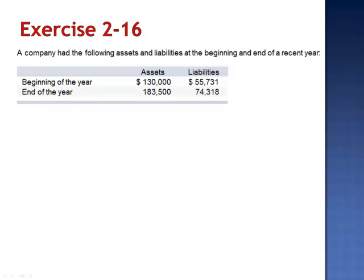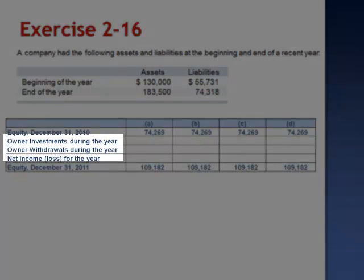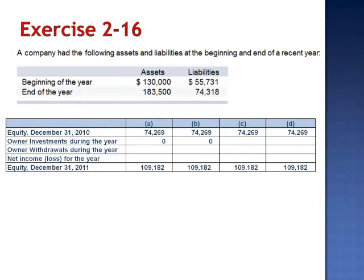When we began this problem, it looked like we had four identical companies — each with the same beginning equity and the same ending equity. But you can't just look at the balance sheet. To find the detail of how well a company is actually operating, we need to look at the detail of equity: the owner's investments, withdrawals, and net income. The strongest company is Company B, which generated $48,713 in net income and allowed the owner to withdraw $13,800 for personal use. The weakest is Company C, where the owner needed to invest $45,000, of which $10,087 were lost through operations.